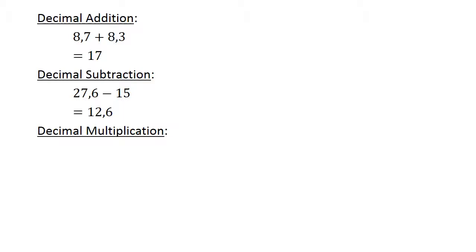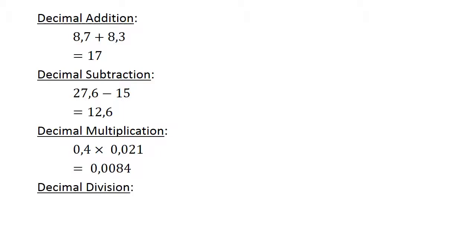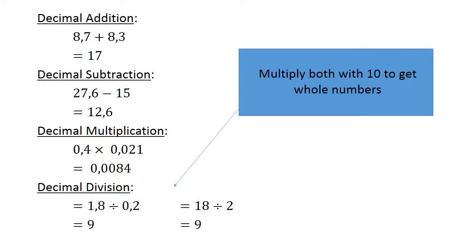Decimal multiplication: 0,4 times 0,021 equals 0,0084. Decimal division: 1,8 divided by 0,2 — multiply both by 10 to get whole numbers, giving 18 divided by 2 equals 9.